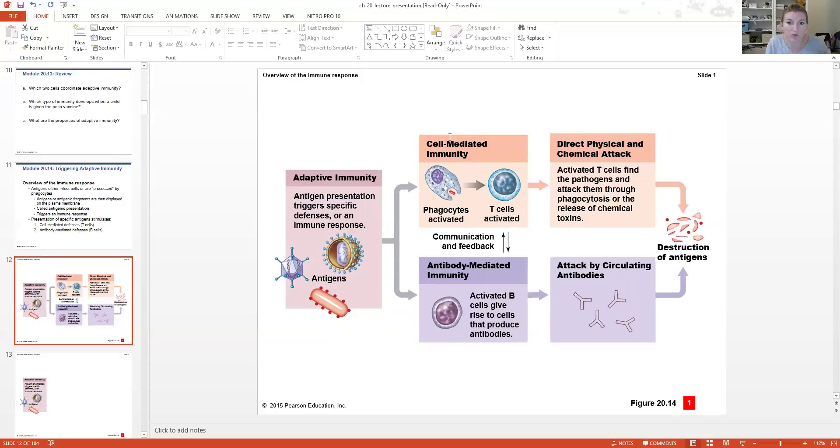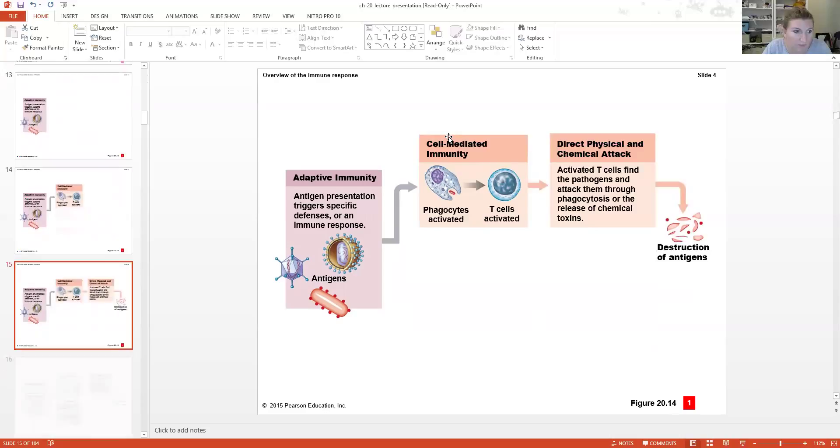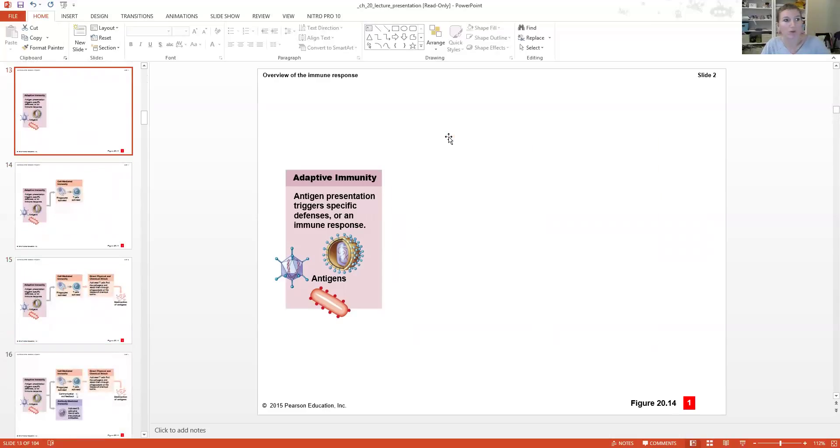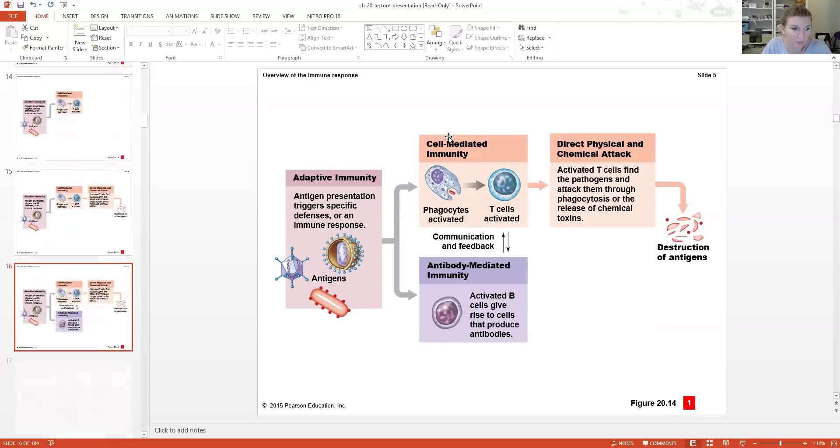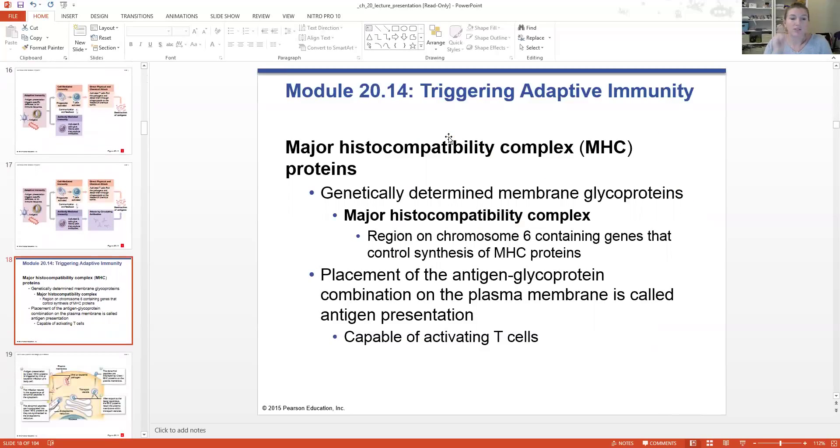This response is going to trigger our cell-mediated defenses from our T cells and the antibody-mediated defenses from our B cells. So, let's look at how this works. We have our phagocytes gobbling up any foreign antigens. When they do that, they're going to present the antigen on the outside of their cell membrane. That's what this antigen presentation is all about. It's going to trigger a specific defense. It's going to activate our cell-mediated and antibody-mediated immunity.